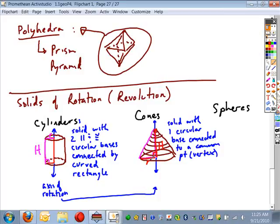Okay, so cylinders are rectangles rotated. A cone is a right triangle rotated. A sphere is what shape rotated? Semi-circle. So if you take a semi-circle, and you rotate it about an axis of rotation, you form your sphere.